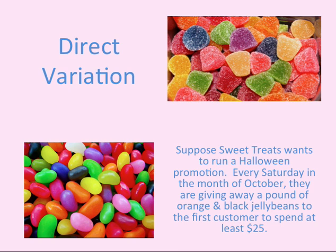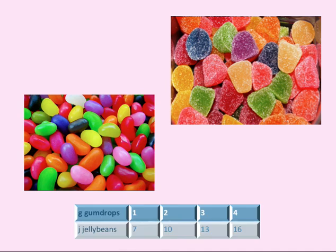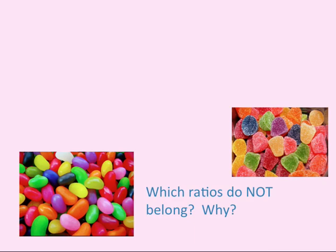They still can expect that they will sell three times as many jelly beans as gumdrops, but now they're going to actually give away four extra pounds of jelly beans in the month. So this equation might be modeled as the number of pounds of jelly beans is equal to three times the number of pounds of gumdrops plus four extra pounds of jelly beans.